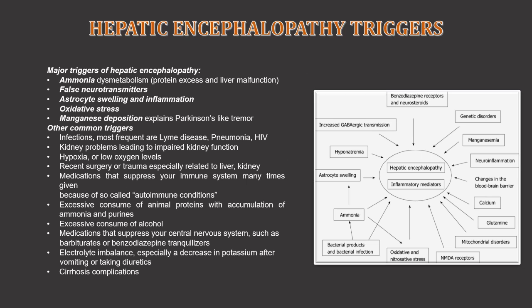The major triggers of hepatic encephalopathy include: first, ammonia — this involves protein excess and a liver malfunction. Then false neurotransmitters, astrocyte swelling and inflammation, oxidative stress, and also manganese deposition, which explains the Parkinson's-like tremors.